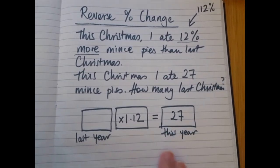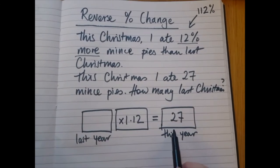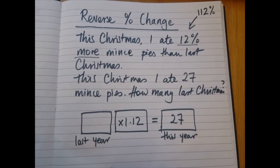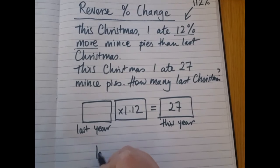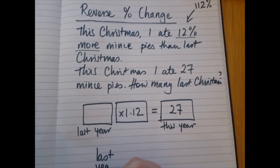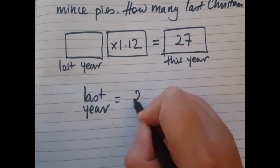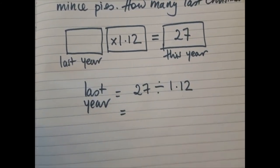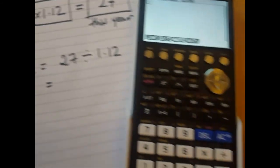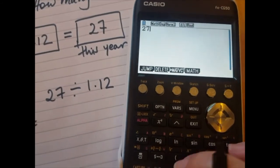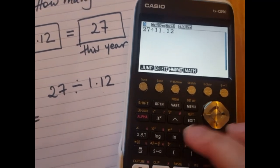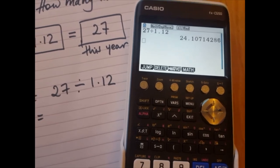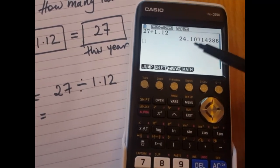So now you have to go backwards in time. The opposite of times 1.12 is divide by 1.12. Last year, therefore, I ate 27 divided by 1.12. Let's work it out on our calculator. 27 divided by 1.12 is 24 — I'm going to round it to the nearest whole number.